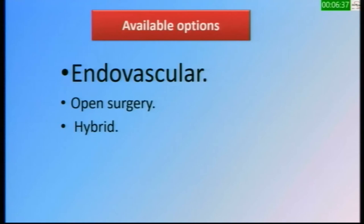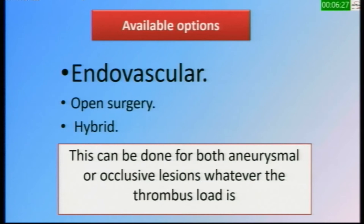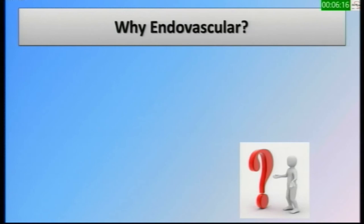How do we do salvage? The endovascular option is at the top of the armamentarium, and you should know this can be done not only for obliterative lesions but also for aneurysmal lesions, and regardless of the thrombus load. Why is endovascular salvage at the top? It is minimally invasive — there is no open operation like creating a new fistula, superficialization, or AV graft.